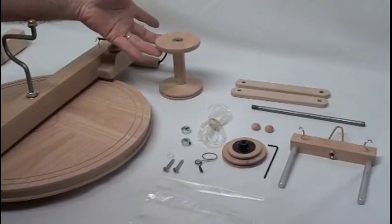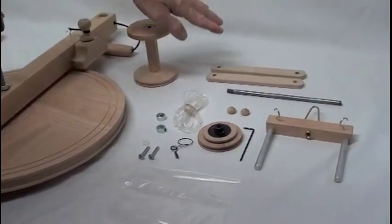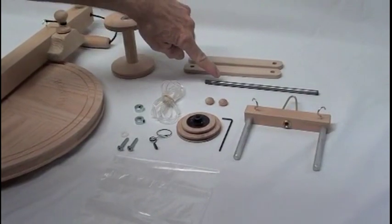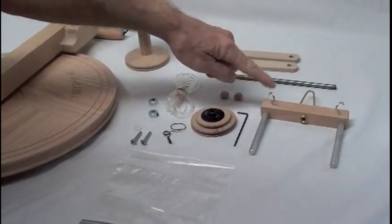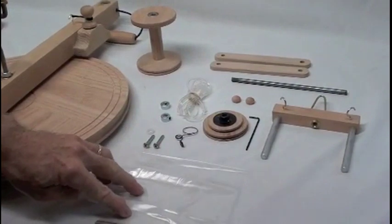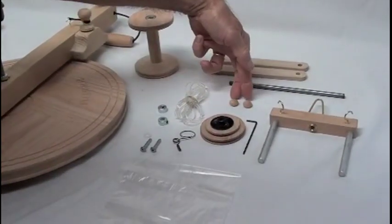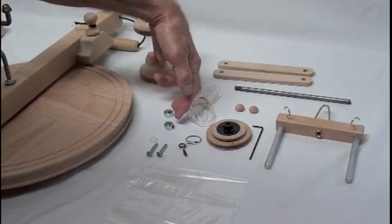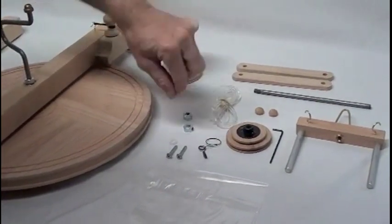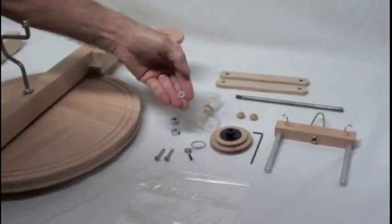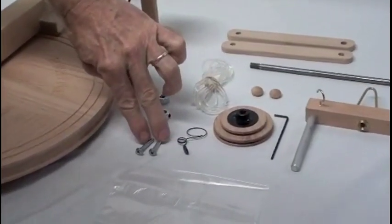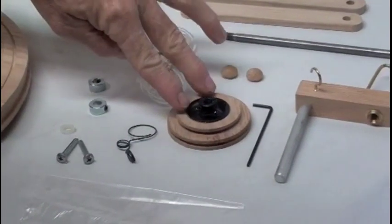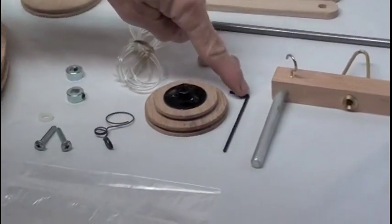A standard bobbin, the two footman, the flyer axle and the flyer, and a plastic bag of parts which includes the two wooden buttons, a drive band, two shaft collars, a little white spacer, two screws, a sliding hook, a whorl, and an Allen wrench.